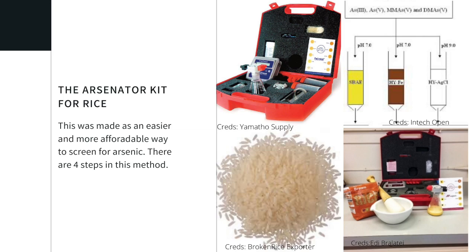The arsenator kit for rice provides an easier way to detect arsenic. The four steps are: first, boil a 5-gram sample of ground rice in nitric acid for about 30 minutes to extract the arsenic. Once the solution is cool, it is transferred to a flask, after which we can use the arsenator kit. Then we add packets of sulfamic acid and sodium borohydride, which react with the arsenic acid to produce arsine gas. A filter paper impregnated with mercuric bromide is then placed in the flask, which catches the gas reacting with the mercuric compound to form a colorful complex, H₂AsHgBr. The darker the color, the greater the concentration of arsenic, ranging from yellow to brown.